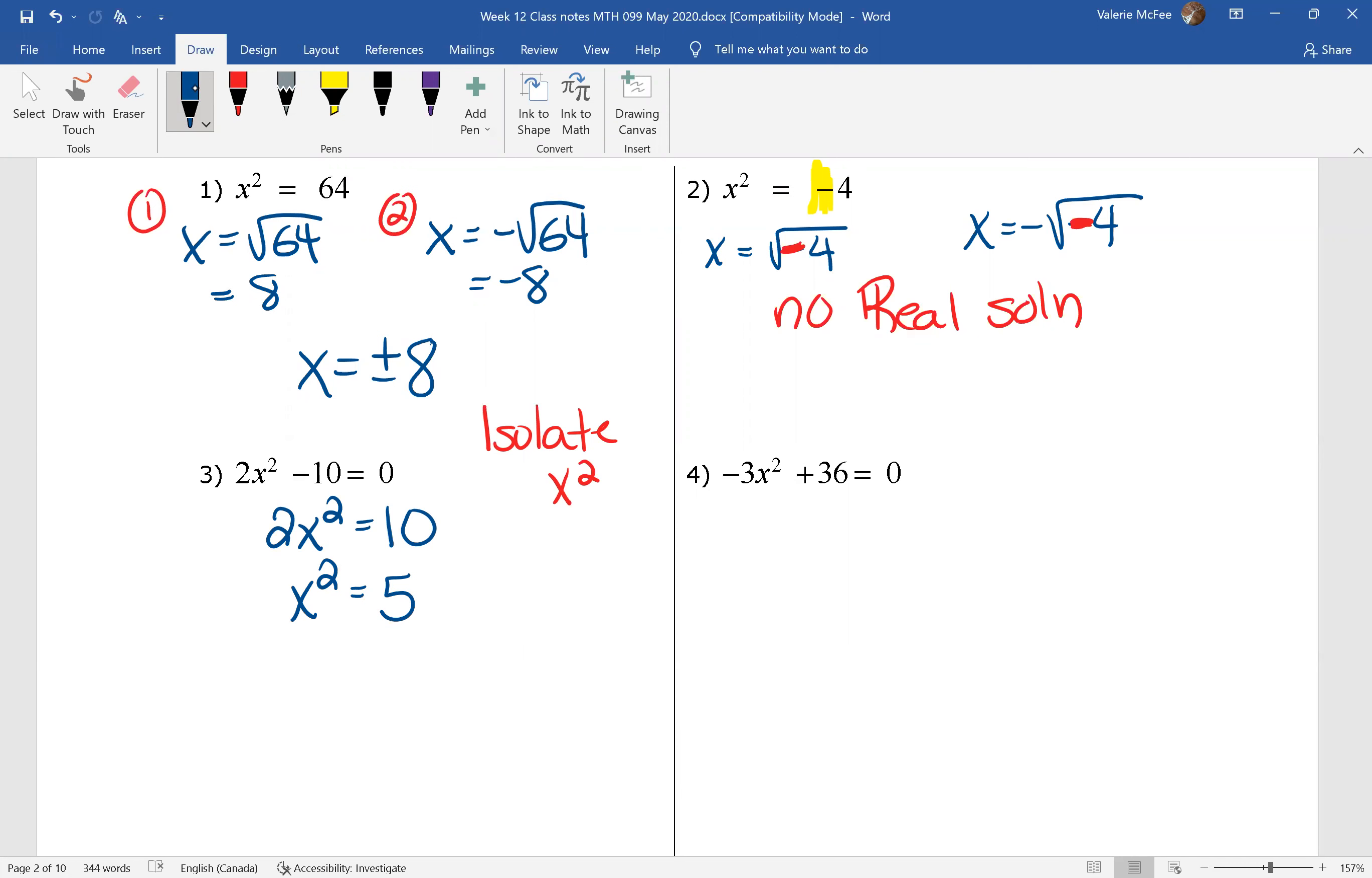Now we have two equations. x equals the square root of 5 or x equals the negative square root of 5. In other words, x equals plus or minus the square root of 5.